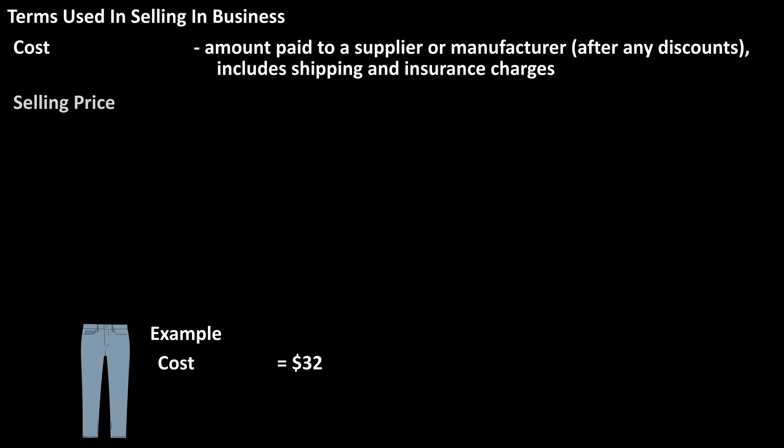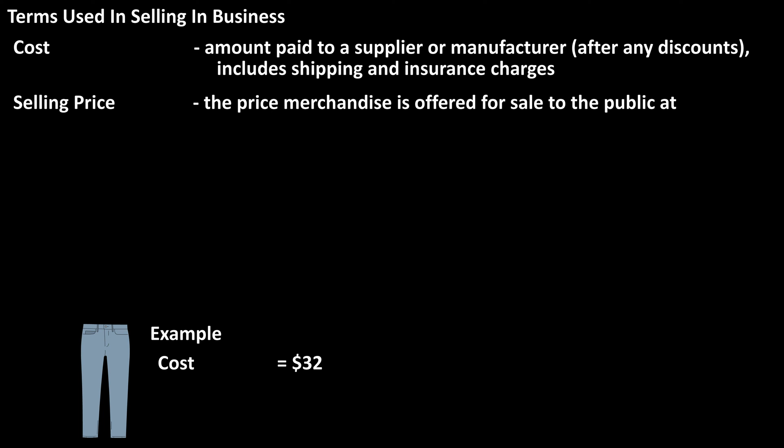Selling price is the next term, and this is the price the merchandise is offered for sale to the public. If the retailer sells the jeans it bought to the public for $52, then $52 is the selling price.